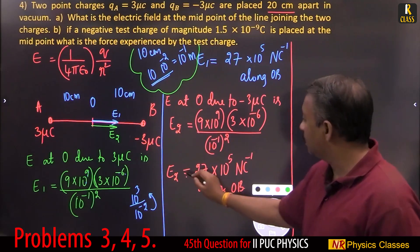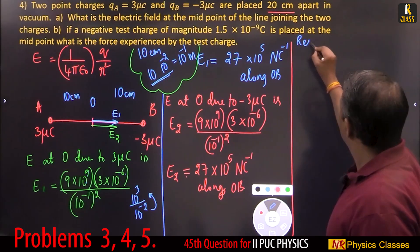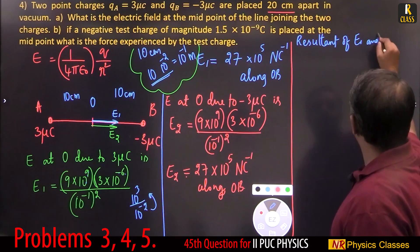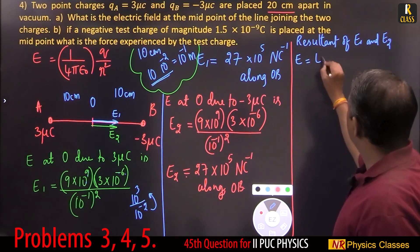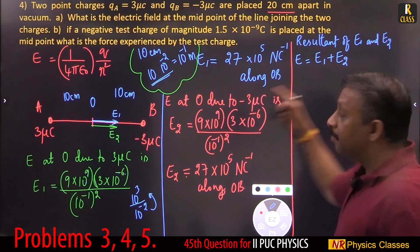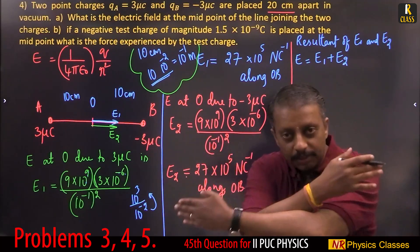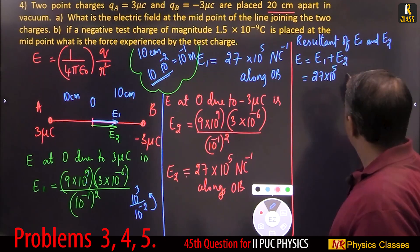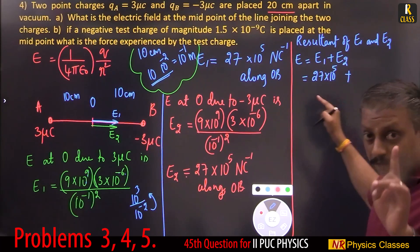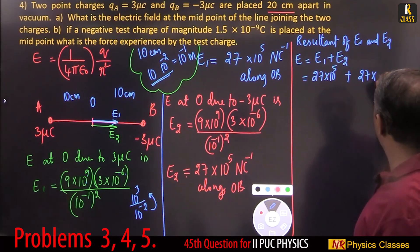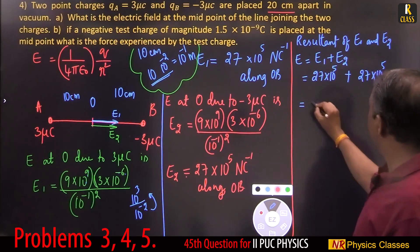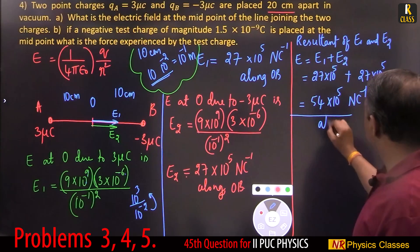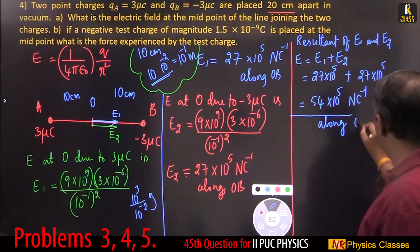Resultant of E1 and E2: E equals E1 plus E2, because they are in the same direction — just add them. If they were in opposite directions, we would subtract. So 27 times 10 to the power 5 plus 27 times 10 to the power 5 equals 54 times 10 to the power 5 Newton per coulomb, direction along OB.